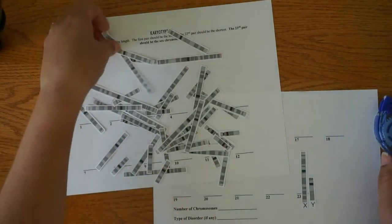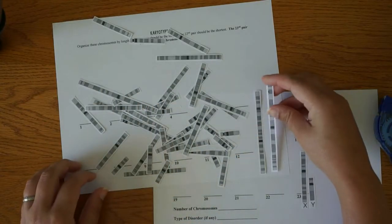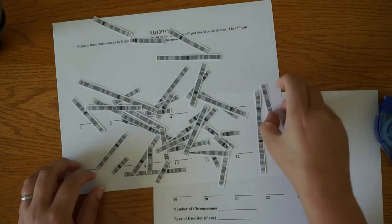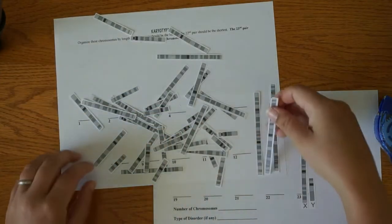Now for the rest of the chromosomes, we are going to start with the longest ones and we are going to pair them up. You can tell if they match because they will be the same length and the banding patterns of genes will also match.